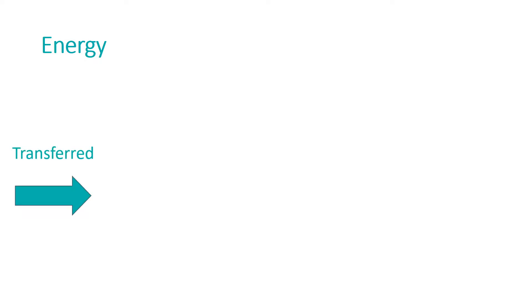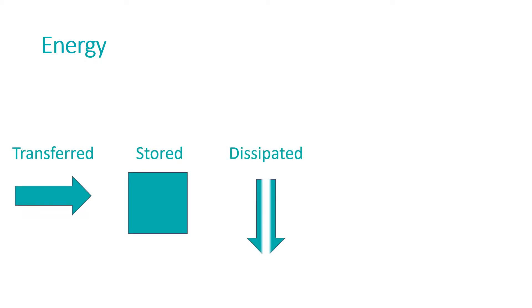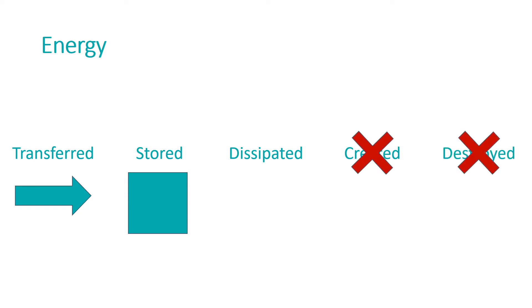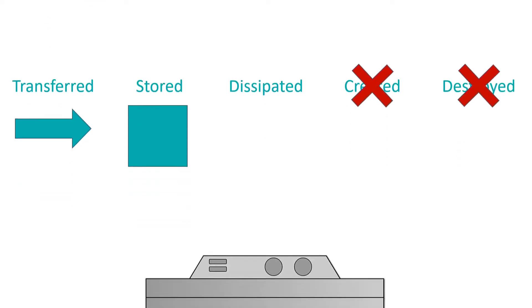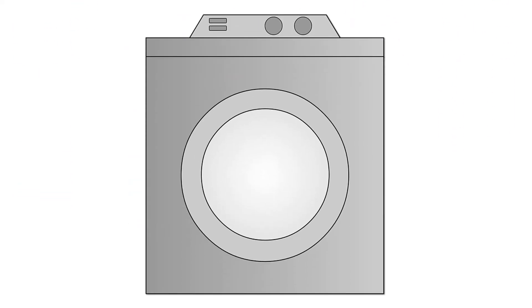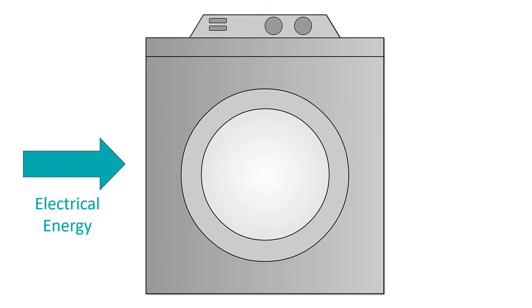Energy can be transferred usefully, stored or dissipated, but it cannot be created nor destroyed. In a closed system where there are energy transfers, there is no net change to the total energy. However, in all system changes, energy is dissipated, so it is stored in less useful ways.